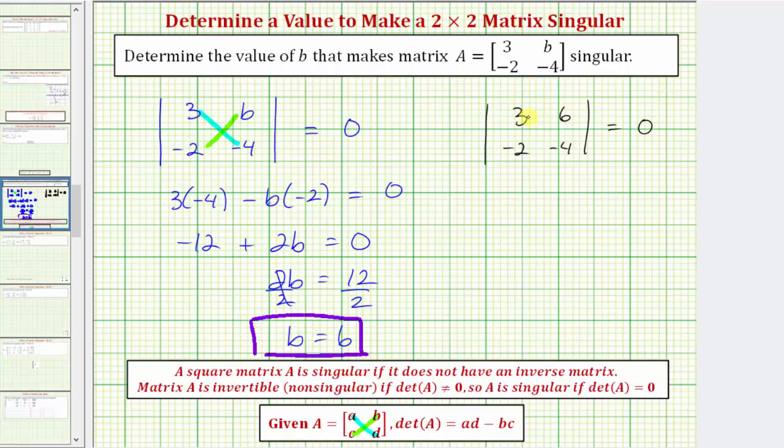So we'd have three times negative four minus six times negative two. Three times negative four is negative twelve. And then we have minus six times negative two. That's also negative twelve. So we have negative twelve. This becomes plus twelve, which equals zero. So our answer is correct. I hope you found this helpful.